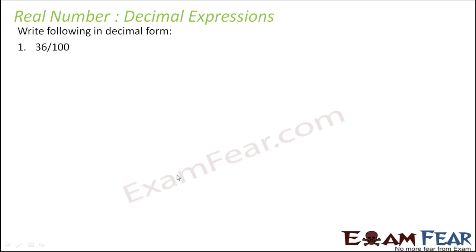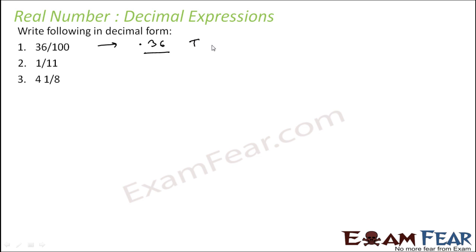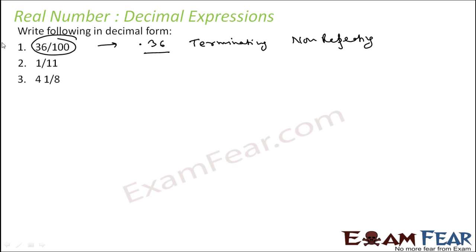We have to write these in decimal form. 36 by 100 — I can easily write as 0.36. And 0.36 is a terminating and non-repeating decimal, which means it is a rational number.